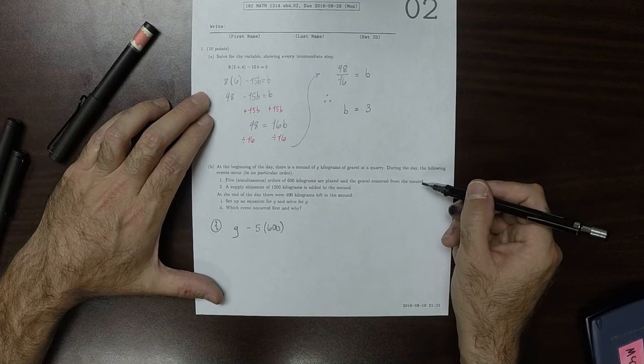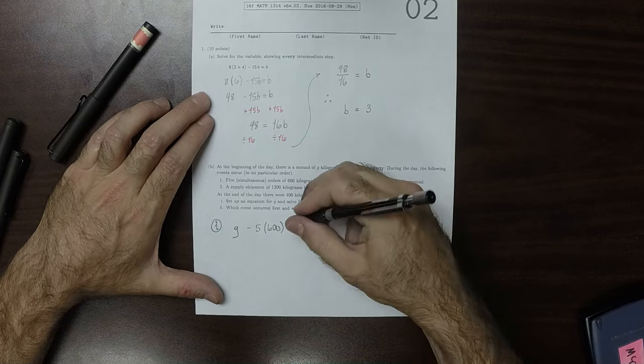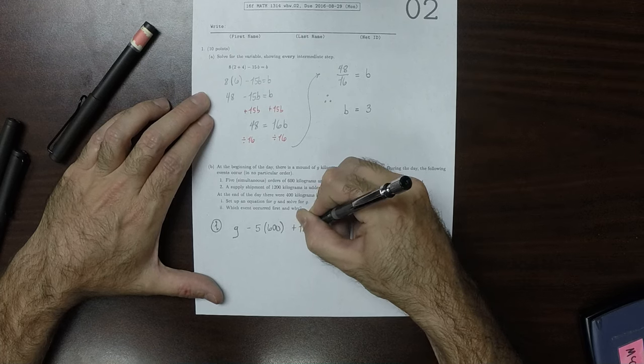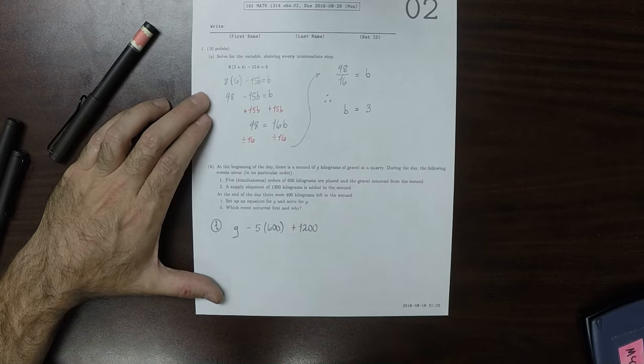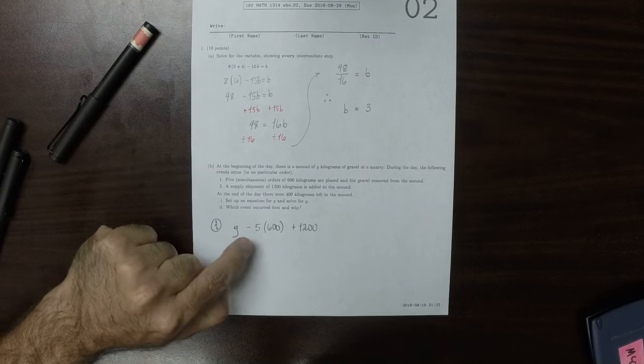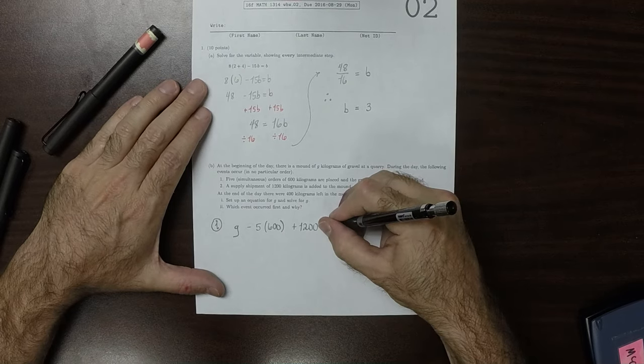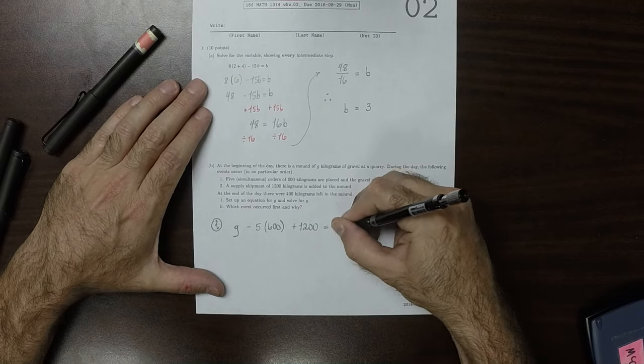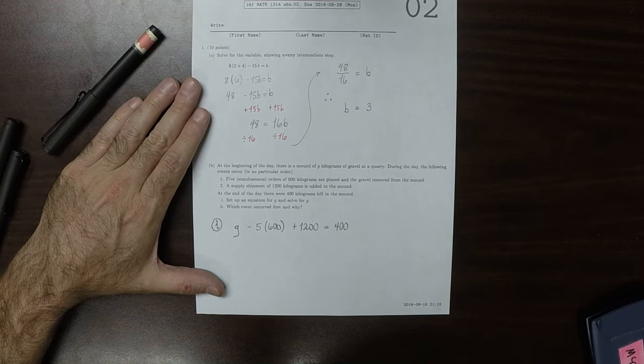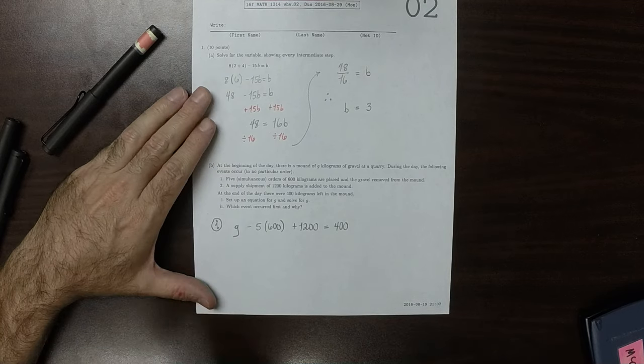Event two is that we get a supply shipment of 1,200 kilograms, so plus 1,200. This is what we started with. These are the events that occurred during the day. And at the end of the day, there was 400 kilograms. And the question is, how much did we have at the beginning of the day?